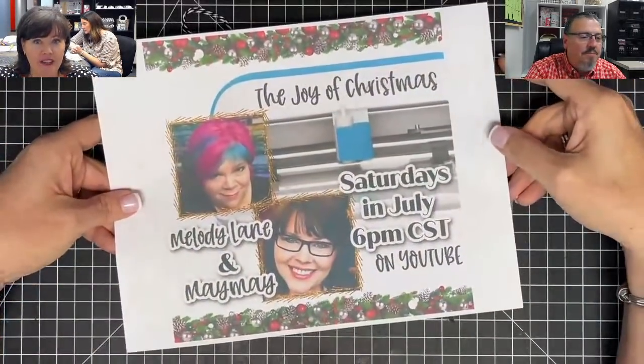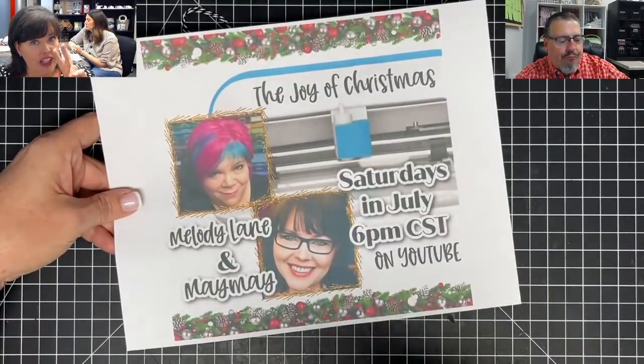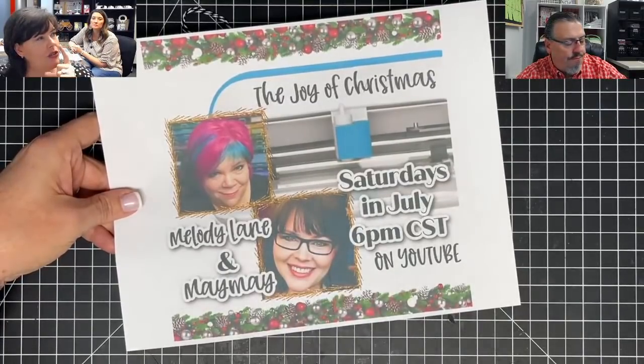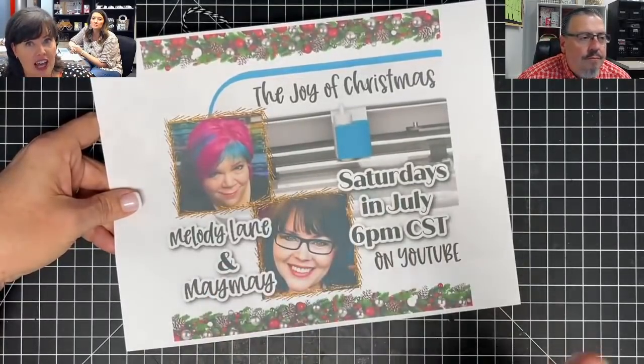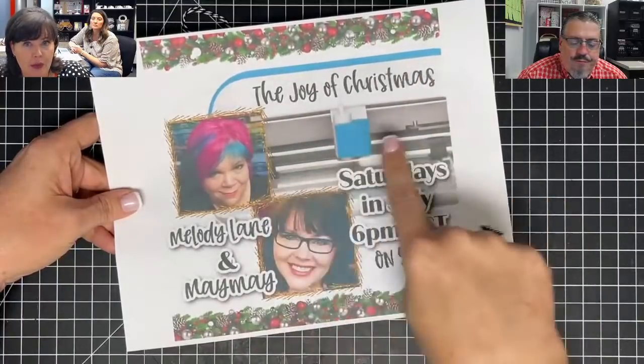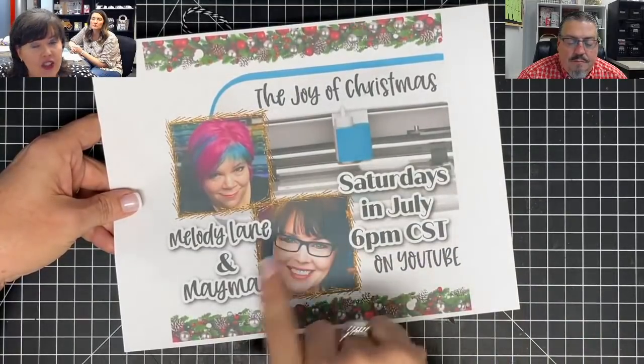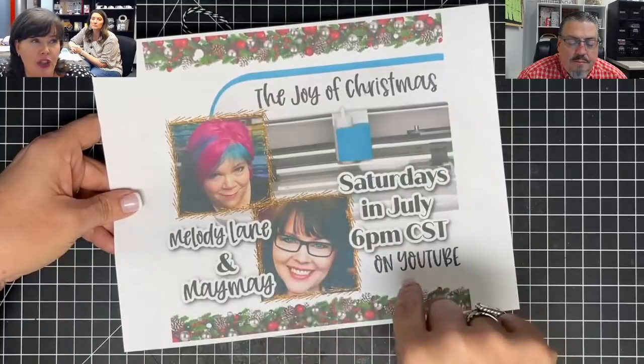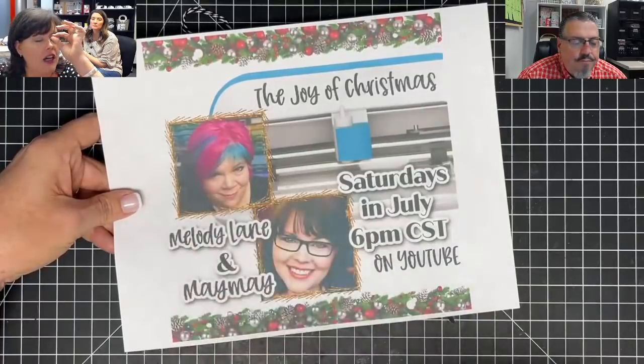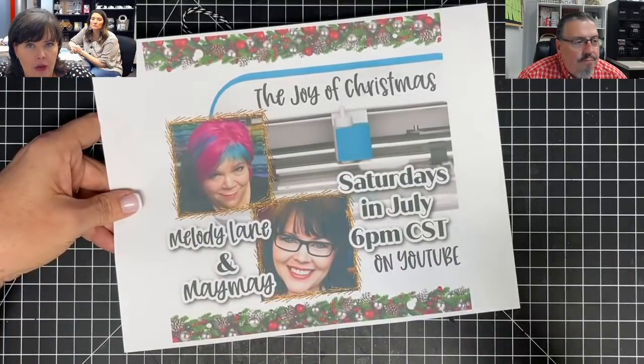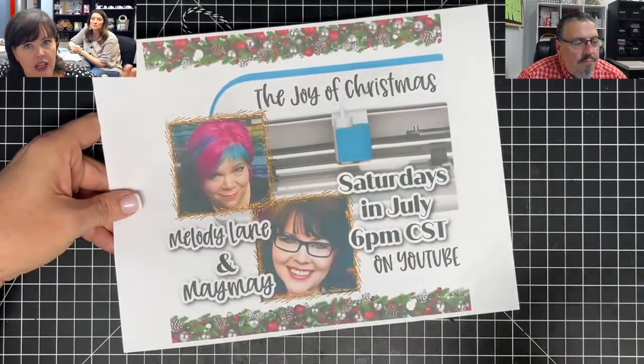The other collab we're bringing you is the Joy of Christmas. This is Melody and I. We're doing a video each. So you get two videos on Saturday at 6 p.m. Central Standard Time. Every Saturday in July, we are focusing on the joy. We're using the joy machine, and we're making projects using the joy. You guys have asked us and asked us for that. Melody Lane is cricket queen. You have to go subscribe to Mel, ring the bell so you can make sure you get notification when she goes live.